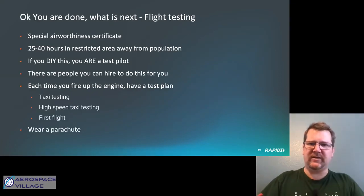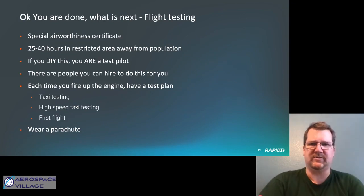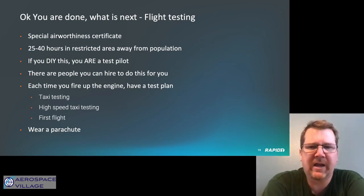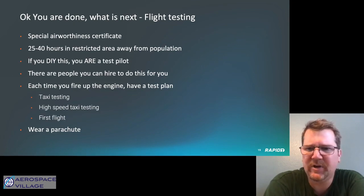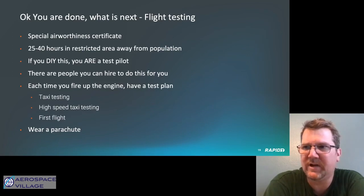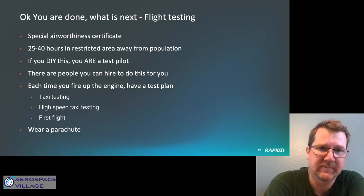Now that you've built your aircraft, what's the next step? You have to get a special airworthiness certificate. You work with what's called a DAR — a Designated Airworthiness Representative — who inspects it. You then receive an airworthiness certificate that requires you to fly 25 to 40 hours in a restricted area away from populated areas, out of a special airport away from everyone else. You're basically flying off the hours to demonstrate that the aircraft is worthy to operate on the same runways and in the same areas as other aircraft. If you DIY this first flight, you effectively are a test pilot.